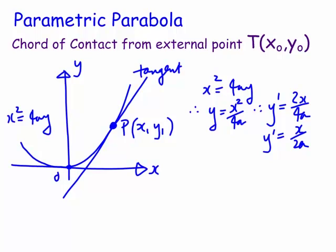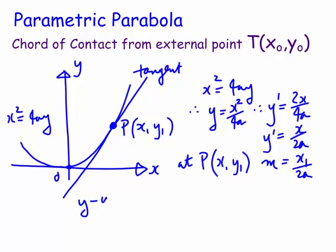We now have to evaluate this at x1. So at point P (x1, y1), we know that the slope of the tangent is equal to x1 on 2a. So we now need to find the equation — it's fairly easily y minus y1 equals m, where m is x1 on 2a, times x minus x1.